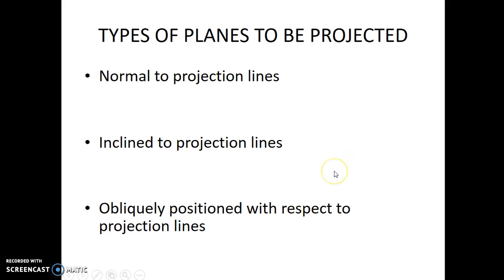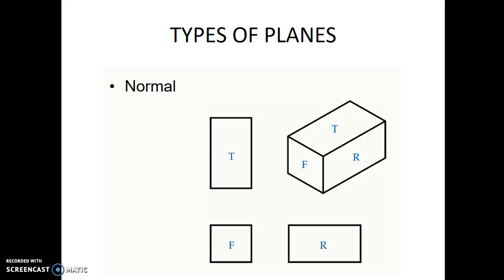In order to make drawings, let us learn how different planes will be placed with respect to the projection lines. There can be a plane normal to the projection lines, a plane inclined to the projection lines, and a plane obliquely positioned with respect to the projection lines. This is showing planes placed normal to the projection lines. The three sides of the object are placed parallel to three different projection planes; therefore, the projection lines will also be normal to the surface of the object.